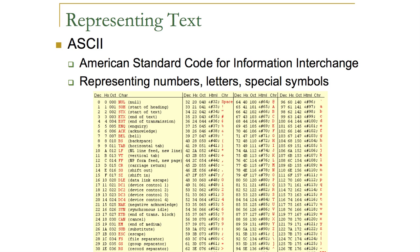This lesson further considers the way that bits can be used to represent information. What's shown on the screen is the ASCII table — the American Standard Code for Information Interchange. It maps numbers, such as decimals, to other kinds of symbols needed in text, for example letters, numbers, and different kinds of special symbols and punctuation.